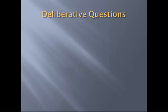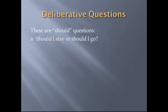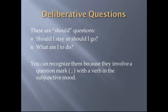Here's another kind of question: deliberative questions. These are not indicative questions but subjunctive questions — questions where the verb is in the subjunctive mood. These are 'should' questions: 'Should I stay or should I go?' — both 'stay' and 'go' in Greek would be in the subjunctive mood, with a semicolon-looking question mark at the end. 'What am I to do?' — again, a deliberative question with the verb in the subjunctive mood. You can recognize them because they have a question mark and a verb in the subjunctive mood. That is the end of this odds-and-ends video dealing with Greek conditions and questions in the Greek New Testament.